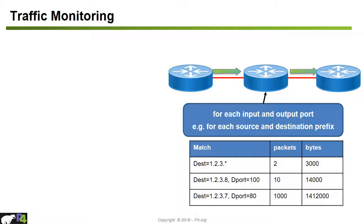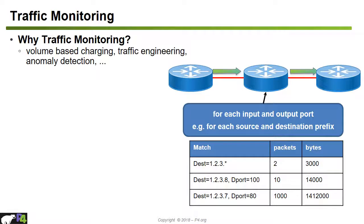Another job of the data plane is traffic monitoring. There are many reasons why traffic monitoring is important. Network operators may want to do volume-based charging based on a customer's tariff, which is important for mobile networks. Another reason is traffic engineering — detecting congested links and routing around them requires knowing how many packets have been sent over a given port. Traffic monitoring is also used to detect anomalies such as unusual traffic spikes.